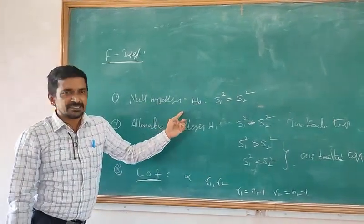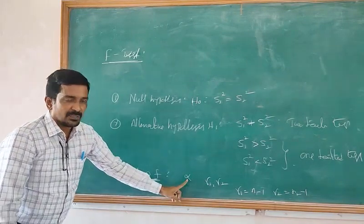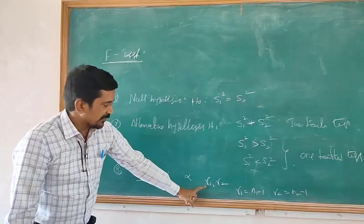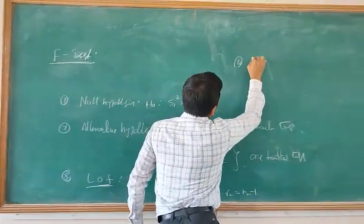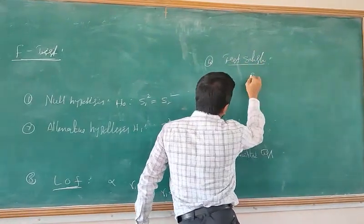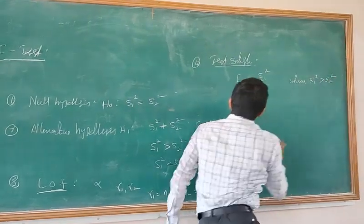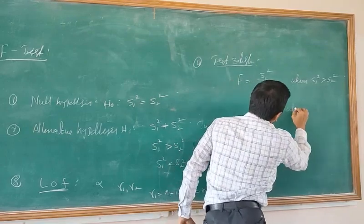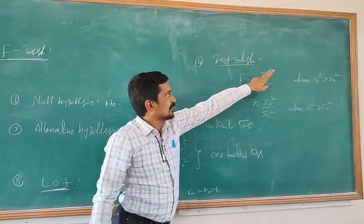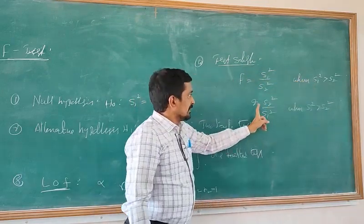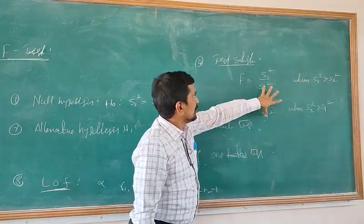To summarize the steps: first, define the null hypothesis; second, write the alternate hypothesis; third, identify the table value at the level of significance alpha under degrees of freedom mu1 and mu2, where mu1 equals N1 minus 1 and mu2 equals N2 minus 1. Fourth, compute the test statistic: F equals S1² divided by S2², when S1² is greater than S2².